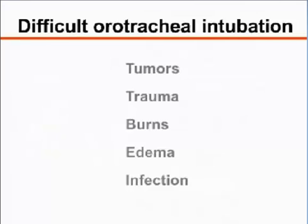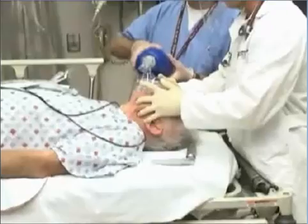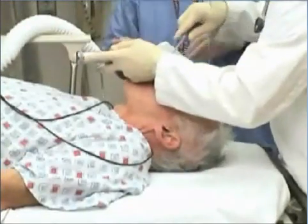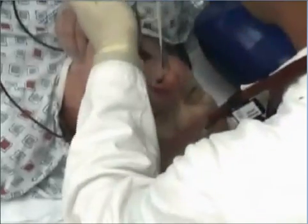The presence of tumors, trauma, burns, edema, or infection of the pharyngeal or laryngeal soft tissues may distort airway anatomy, leading to difficult orotracheal intubation. When faced with a potentially difficult airway, consulting with an experienced intubator and preparing to use an alternative intubation technique are recommended.